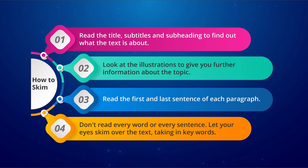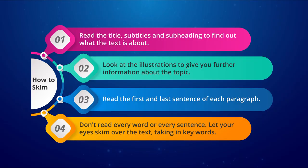To skim, you can follow these steps: read the title, subtitle, and subheadings to find out what the text is about; look at the illustrations for further information about the topic; read the first and last sentence of each paragraph; and do not read every word or every sentence — let your eyes skim over the text, taking in keywords.